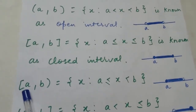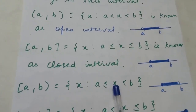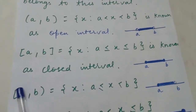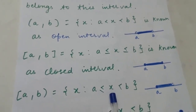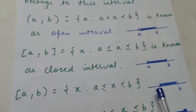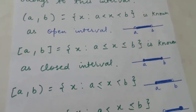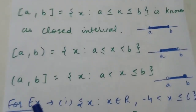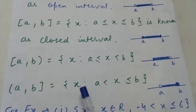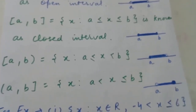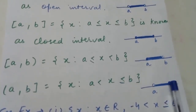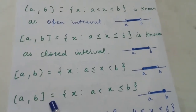Another type is [a, b) — a has a closed bracket, b has an open bracket. This means all elements between a and b, including a but not b. On the number line, the circle at a is filled and the circle at b is empty. Similarly, (a, b] includes all elements between a and b and includes b but not a, so the circle at b is filled. These are the four types of intervals as subsets of real numbers.